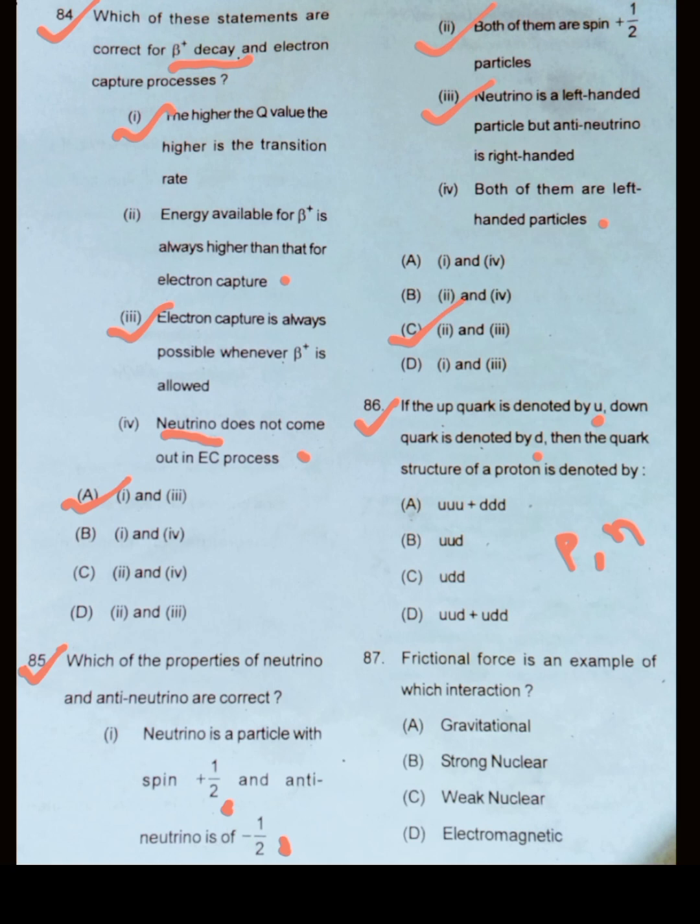And as we know, down quark is slightly heavier than the up quark. So option number B is correct for configuration for proton.